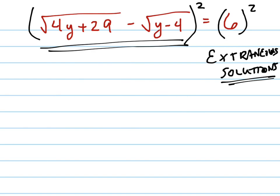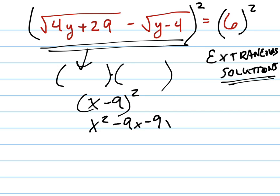Instead, you need to think of it as this thing right here times itself. And if you remember what you get when you do, like for instance, x minus 9 squared, you get x squared minus 9x minus 9x plus 18. In other words, you get x squared minus, I'm sorry, not 18, 81.